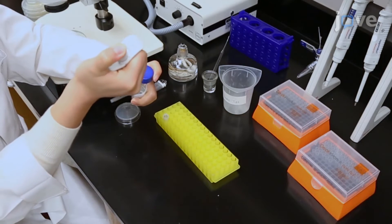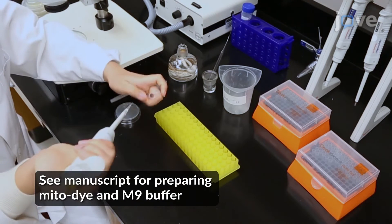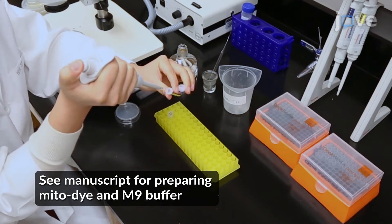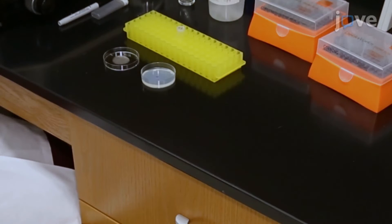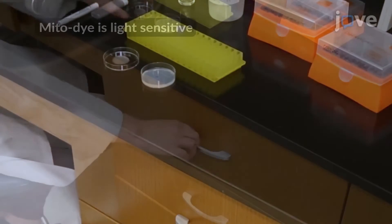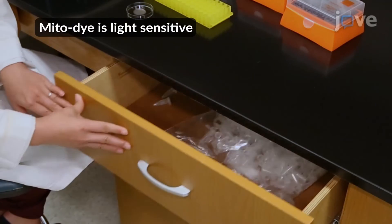Mix together 2 µL of 1 mM mitodye in DMSO and 10 µL of M9 buffer in a microcentrifuge tube. Pipette all of the mitodye solution onto the food dot on the male staining plate. Place the plate in the dark to dry for 30 minutes.